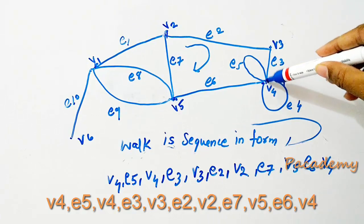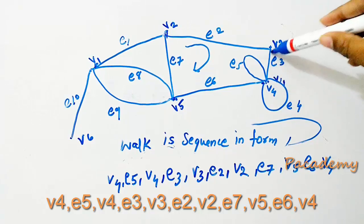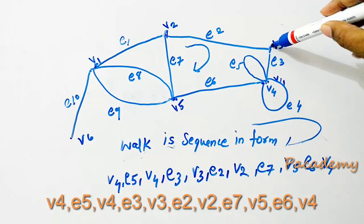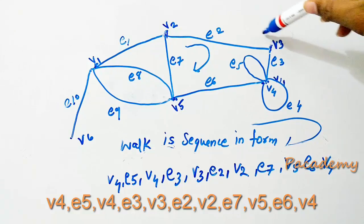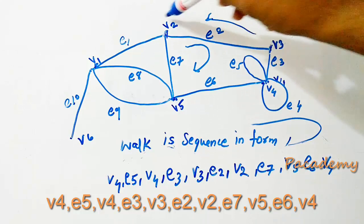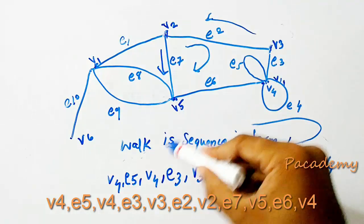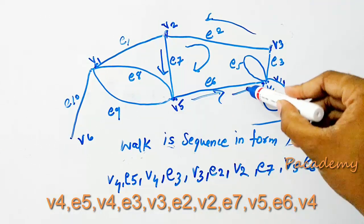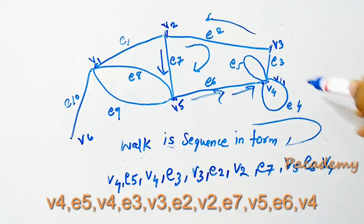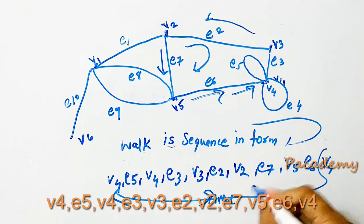A walk in the form of starting from v4, it goes to e5 and comes back to v4 and goes to e3, then goes to v3, and then it goes via e2, and from v2 it goes via e7, and from v5 takes e3 and comes back to v3 to v4. The starting and end vertices are the same, so this is a closed walk.